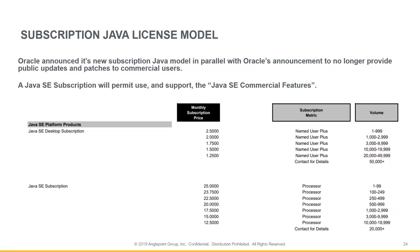If you're in need of additional licensing, these licenses will likely be sold in a subscription model — that's just the route Oracle is moving as a whole. It only includes two different license types, the difference being the metric: Java SE Desktop is on a named user plus metric and Java SE Subscription is on the processor metric. Whichever metric is right for your organization, either one will get you access to Oracle support as well as the Java commercial features.